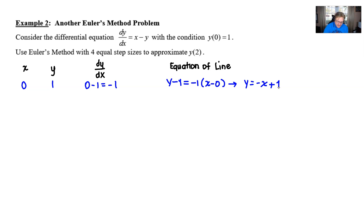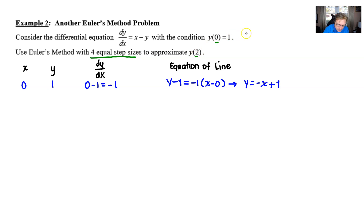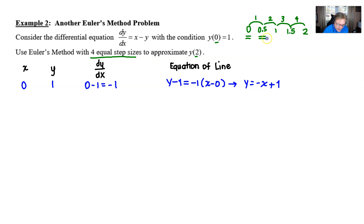Now we need to figure out our step size, because in this problem it wasn't given to you like in the previous example. You'll have to do a little detective work: if I'm dealing with four equal steps and I want to get from 0 to 2, it makes sense that each step is going to be one half. That gives us four steps to reach 2, and the next x value would be one half.